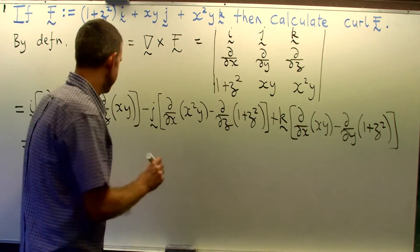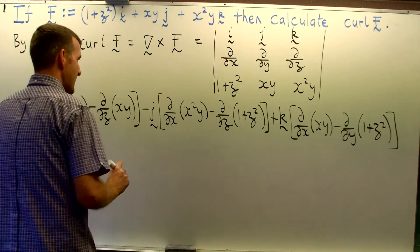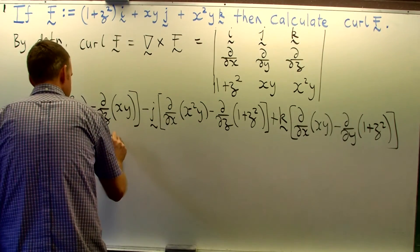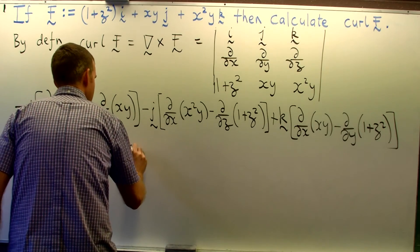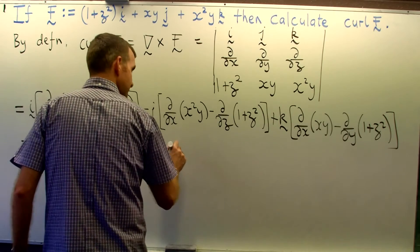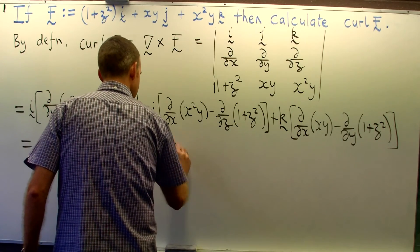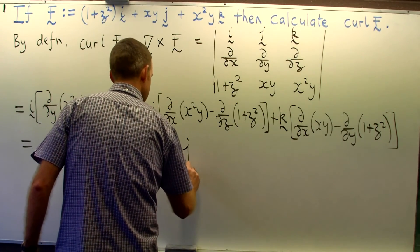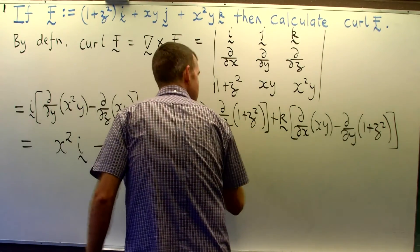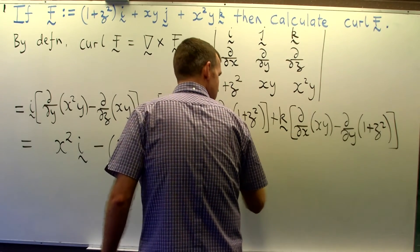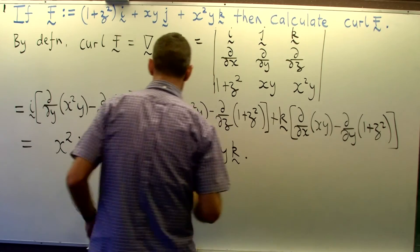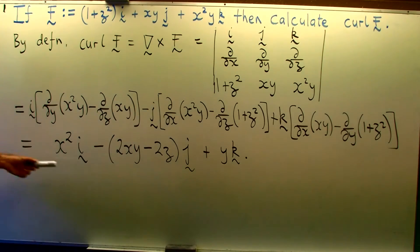In here we're going to get something like 2xy minus 2z j. And then finally over here we're going to get something like just y. Okay so this is our answer.